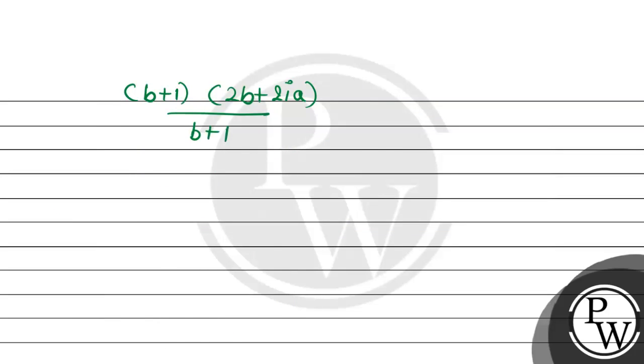So b plus 1 cancels. 2 common, so we have got b plus ia upon 2. 2 cancels out, so we get b plus ia. That is RHS. Hence proved. I hope the solution is clear. Thank you.